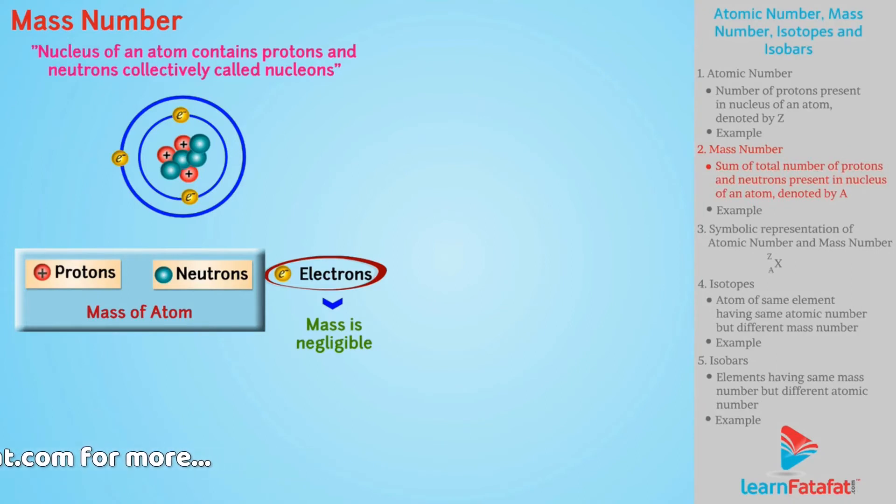So, mass number is defined as sum of total number of protons and neutrons present in nucleus of an atom and is denoted by capital A.